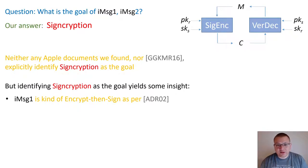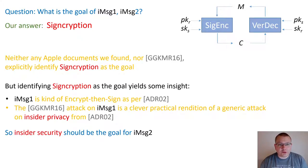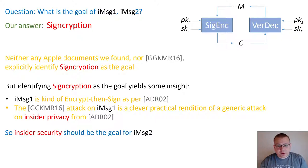But identifying signcryption as the goal provided us with some insights. First, the original iMessage implemented a variant of the encrypt-then-sign composition proposed by An, Dodis, and Rabin in 2002. Furthermore, the 2016 attack against iMessage is a clever practical rendition of a generic attack on insider privacy that was also explained by An, Dodis, and Rabin. So it is clear that the current iMessage scheme also aims to provide insider security.